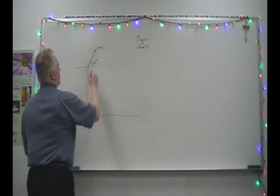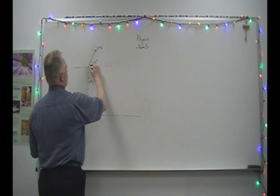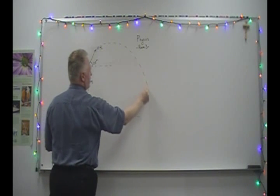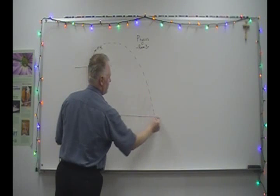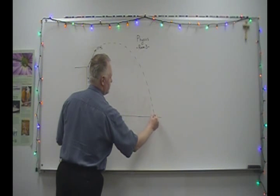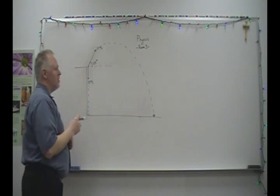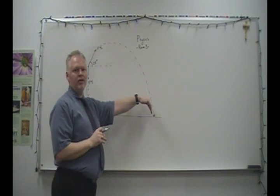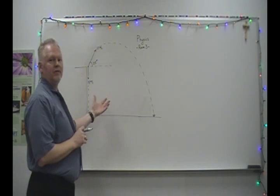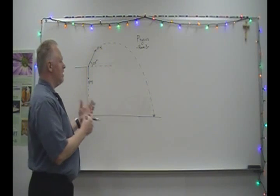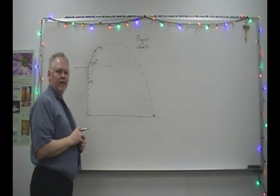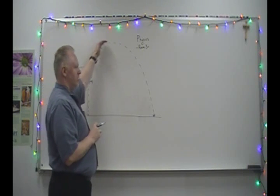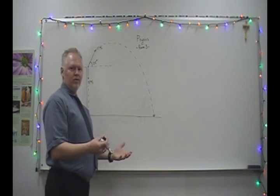The snowball thrown at 25 degrees would follow a parabolic trajectory. Remember, this parabolic motion is really an approximation — it's actually part of an ellipse, which we'll discuss more when we get to satellite motion. But for now, we're treating this trajectory as parabolic motion.